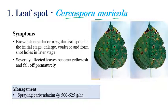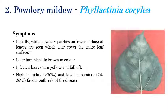If this disease gets infected severely, yellowing can be clearly seen as well as premature defoliation. Coming to the management aspects, spraying Carbendazim at the rate of 500 to 625 grams per hectare can be recommended.